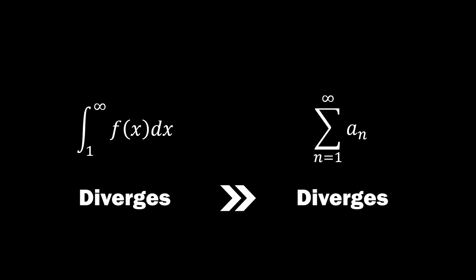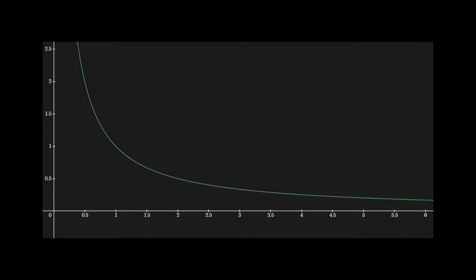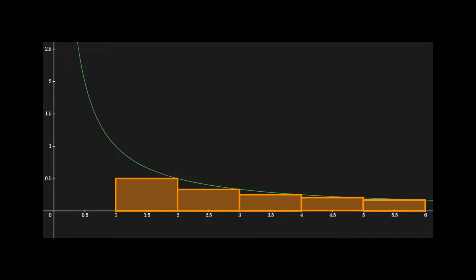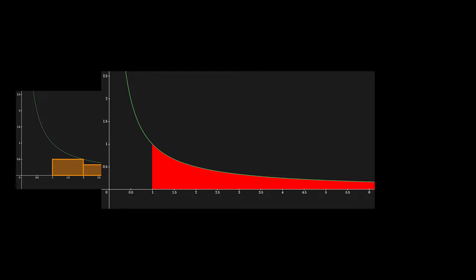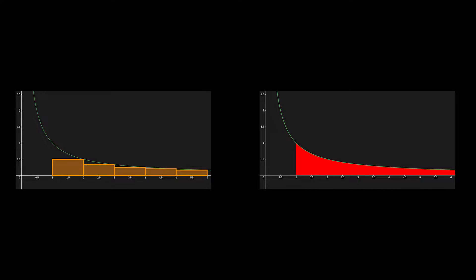Now let's visually demonstrate the integral test. Here an arbitrary function f of x is represented in green. To calculate the right Riemann sum from 1 to infinity, we draw rectangles with a width of 1 each, shown in orange. The precise area under the curve of the function f of x from 1 to infinity is marked in red. Comparing this red continuous area with the right Riemann sum, we can observe that the continuous area is greater than or equal to the sum of the rectangles.